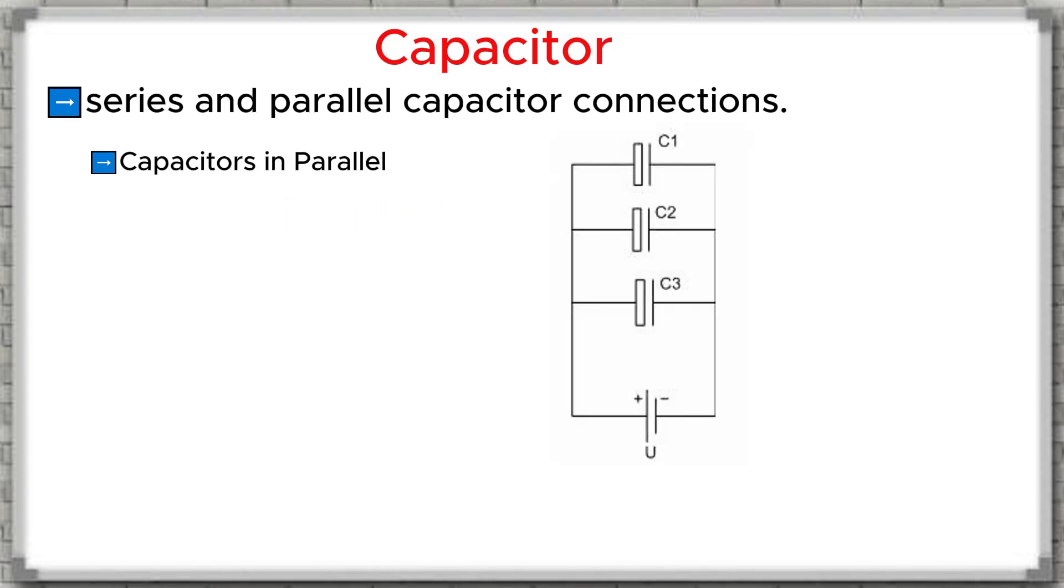Capacitors in parallel: When capacitors are connected in parallel, the total capacitance is equal to the sum of the capacitances of all the capacitors. C total equals C1 plus C2 plus C3. The voltage rating of the parallel group is determined by the capacitor with the lowest voltage rating. If the capacitors are electrolytic capacitors, they must all be connected with the same polarity - positive to positive and negative to negative.